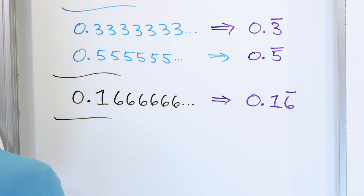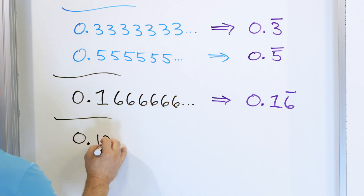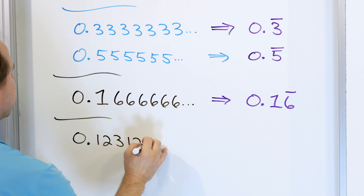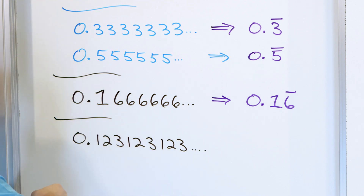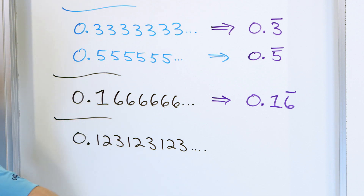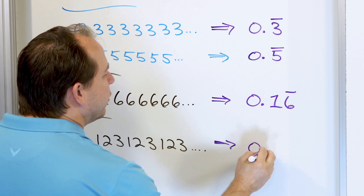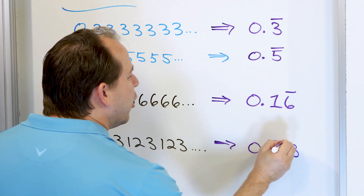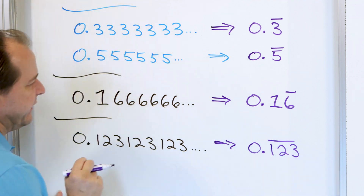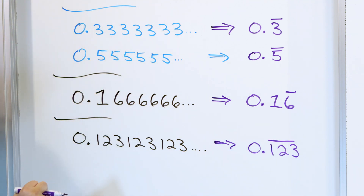You can have different patterns as well — even crazy patterns. For example, 0.123123123... Obviously the one, two, and three as a group are what are actually repeating. So you write that as 0.123, but in this case the bar goes over all three digits. It tells you that the one, two, three as a grouping is what is repeating: 1, 2, 3, 1, 2, 3...